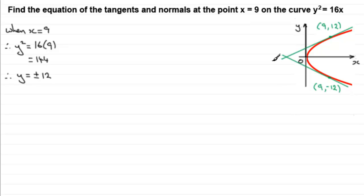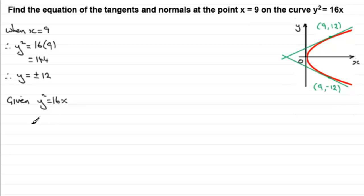Being straight lines, we need to get the gradients, which will be found by getting the gradient of the curve at the point where x equals 9. When it comes to working out the gradient we need to differentiate our equation for the curve. We've got y squared equals 16x, and there are two ways we can differentiate this — implicit differentiation, or we could make y the subject and differentiate that way.